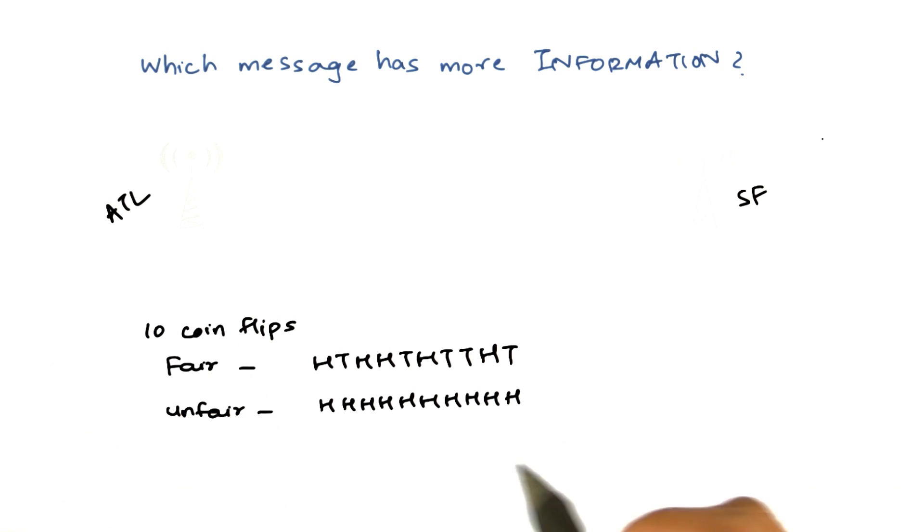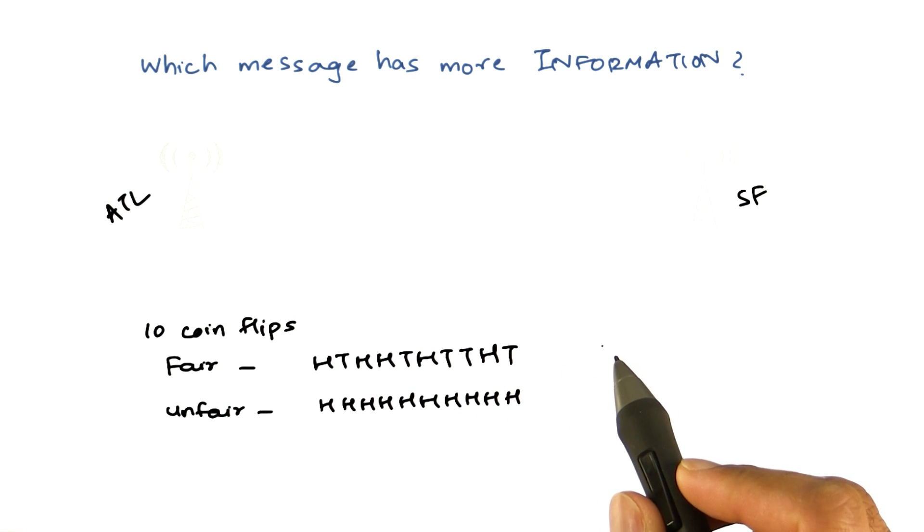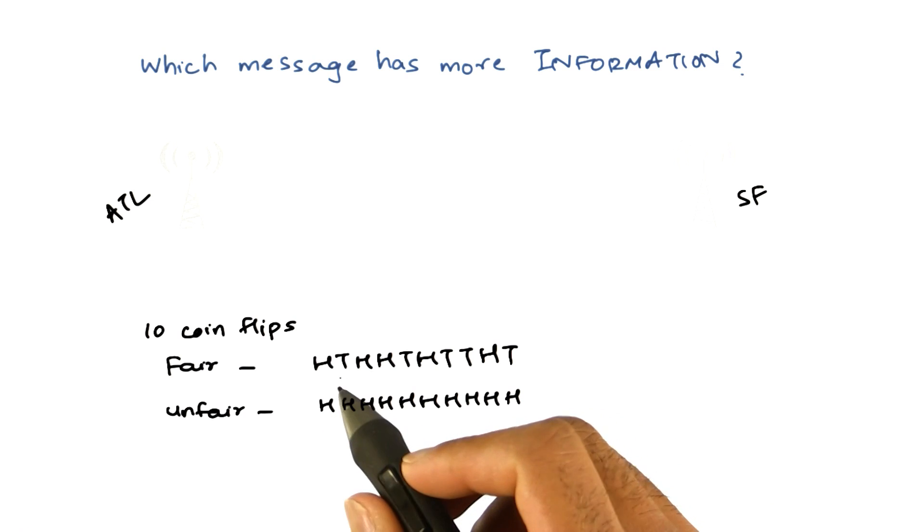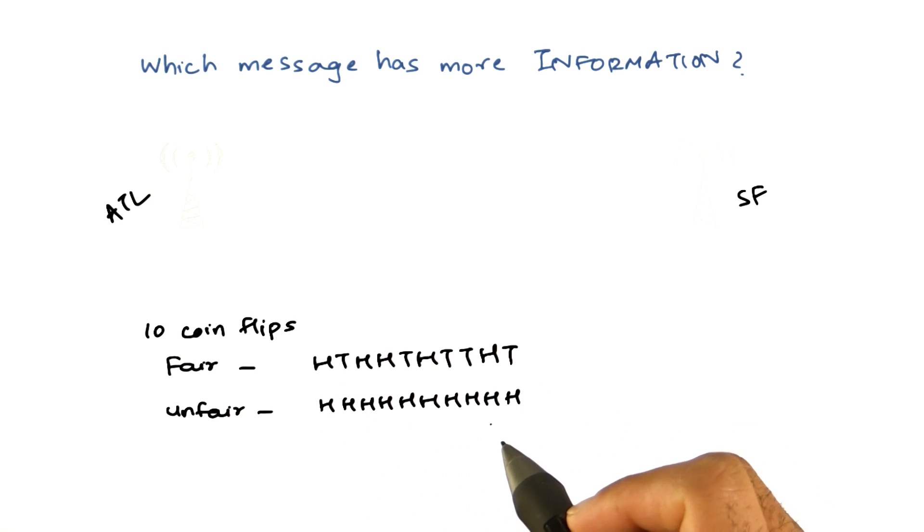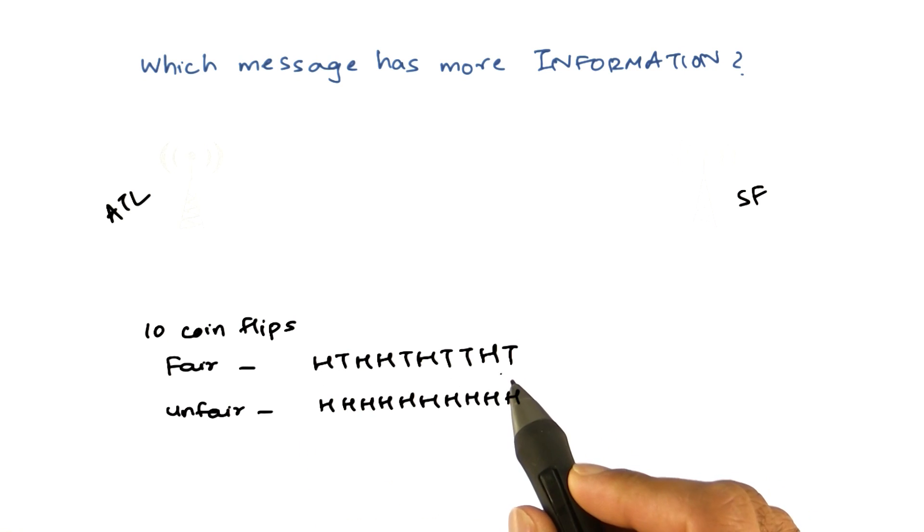So if I had to transmit this sequence, how many bits of message will I require? Let's assume that I can represent this sequence using ten binary digits. A zero representing heads, one representing tails, and I can write down this sequence as zeros and ones using ten bits. I can also write down the same sequence of the unfair coin using those ten binary digits.